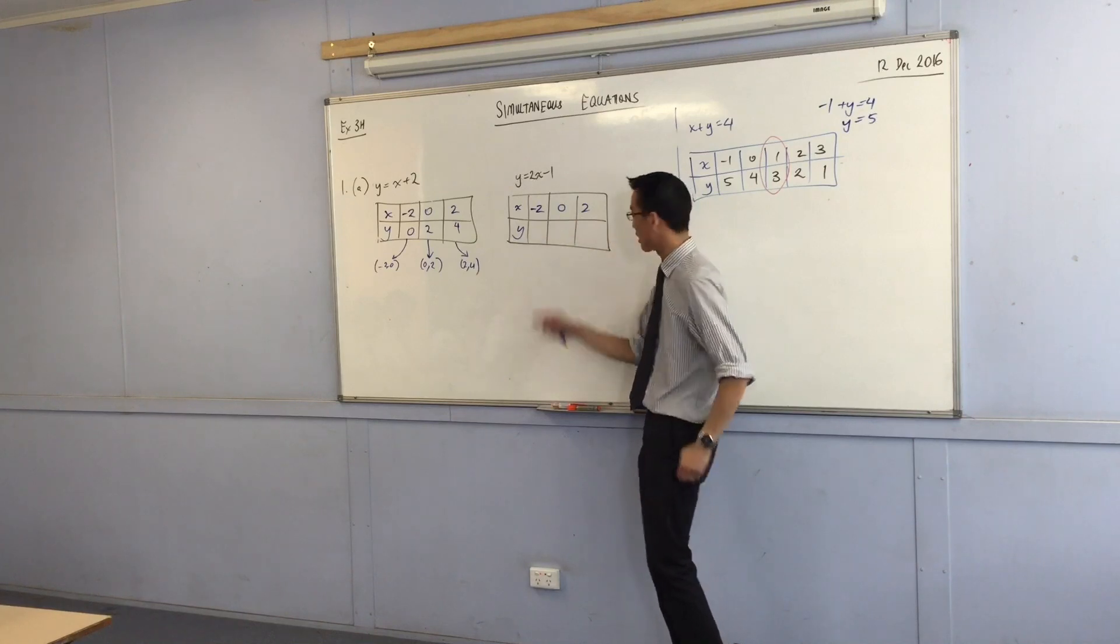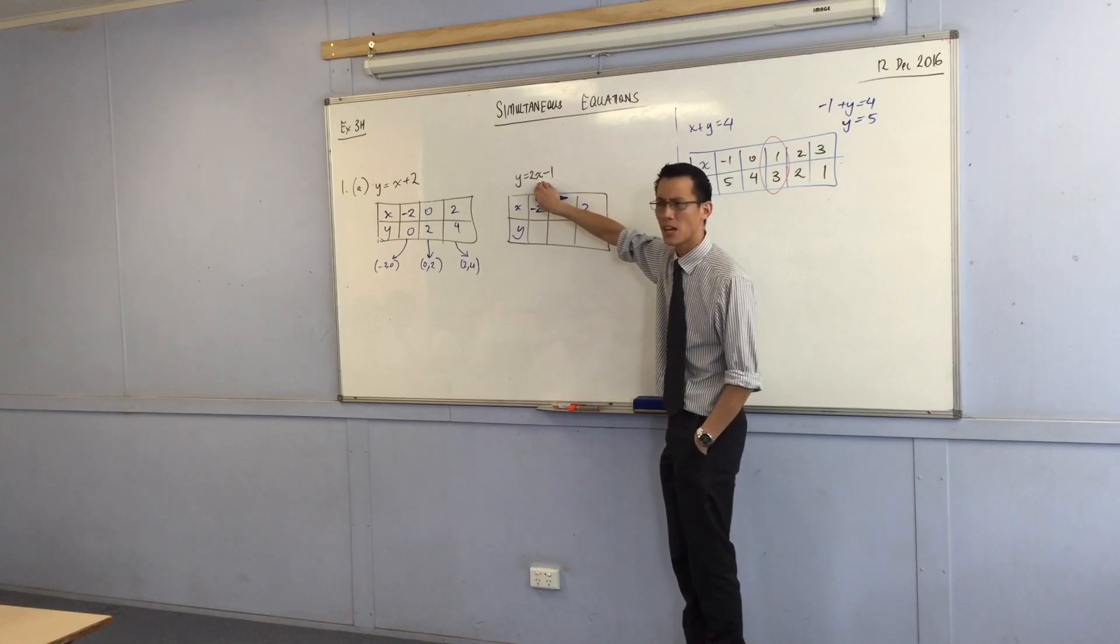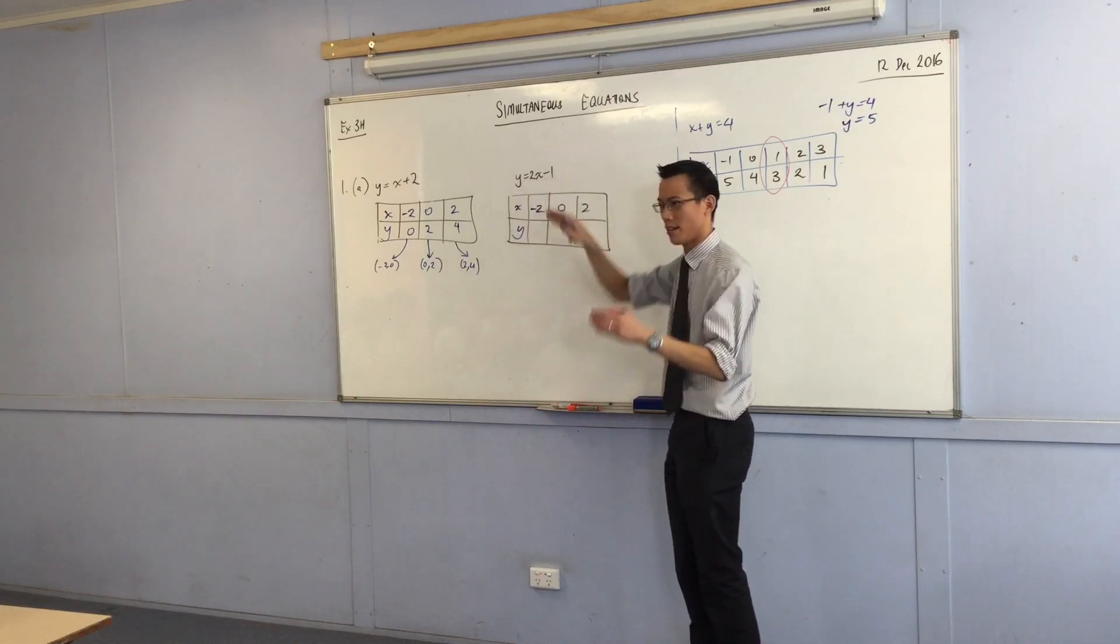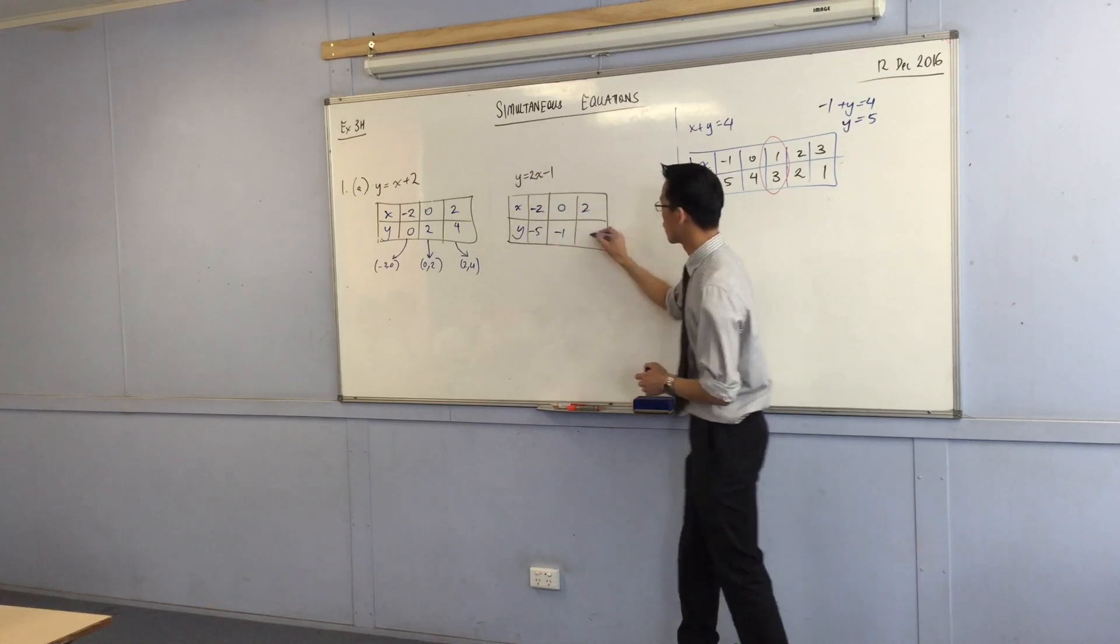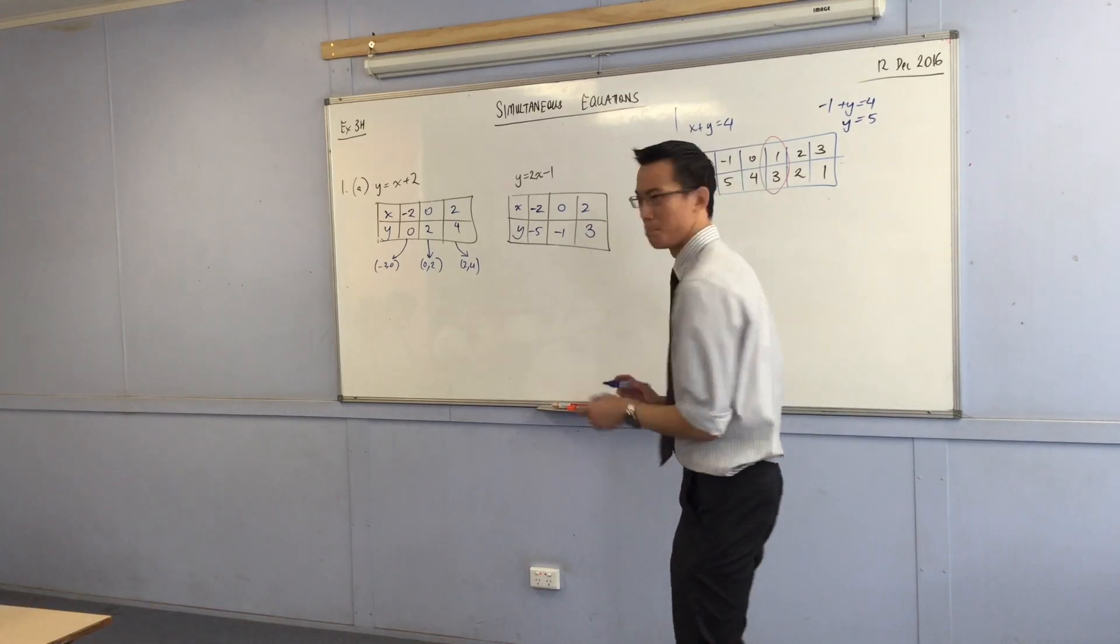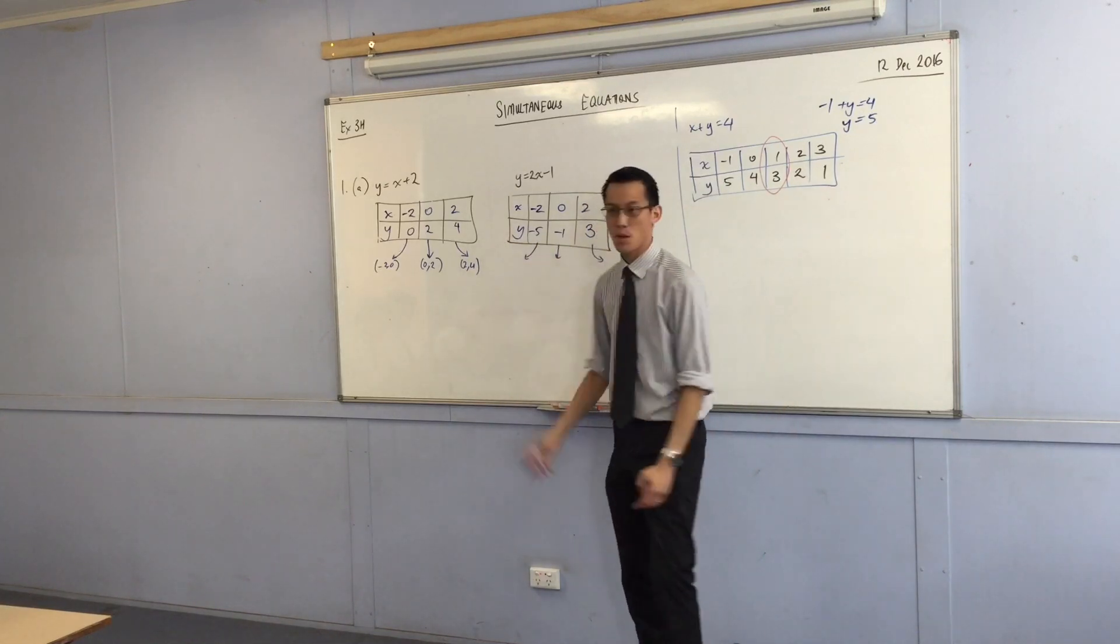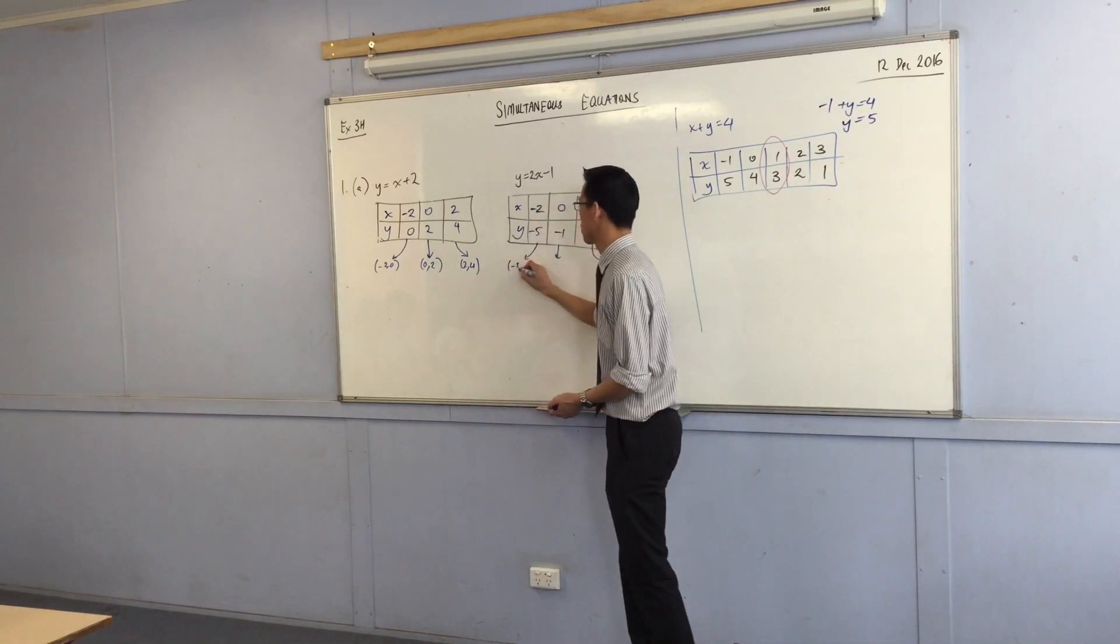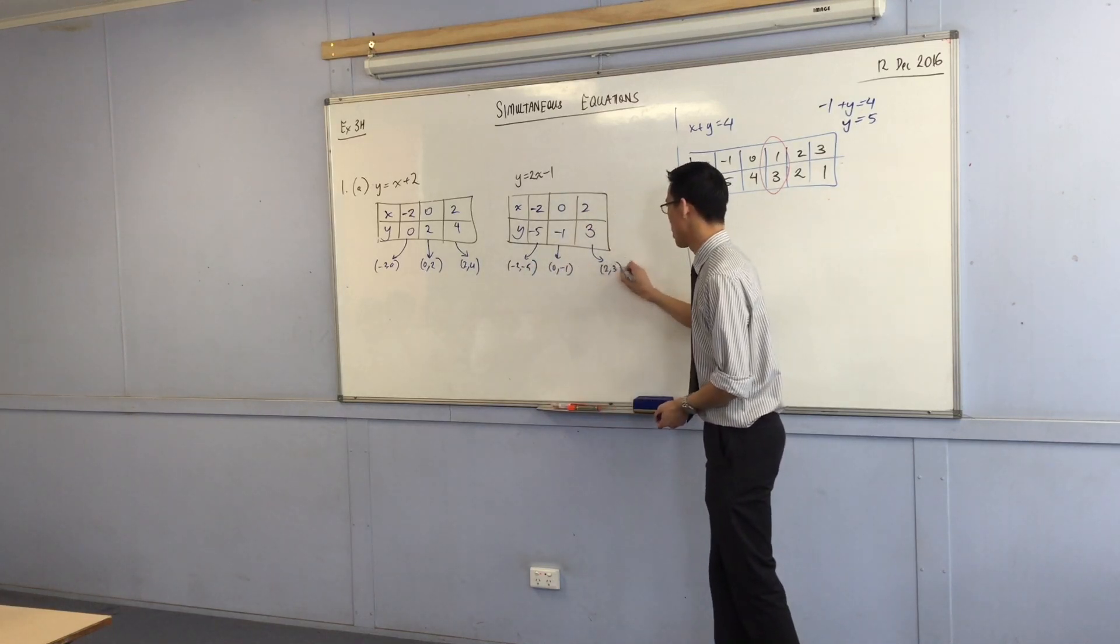Last thing, I'm going to do these guys over here. If I put in negative two again, but to a different equation, what's two times negative two? Negative four. Then you take away one, then you go even further negative. Negative five. You put in zero, you're going to get negative one. You put in two, you're going to get positive three.